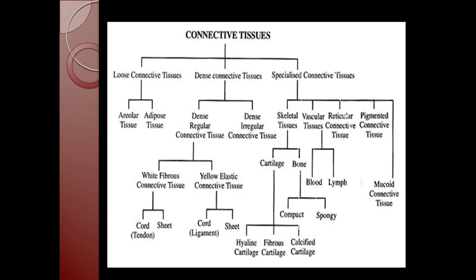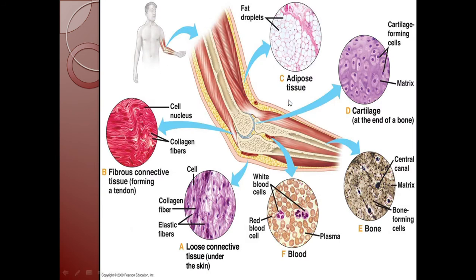Now let us discuss each type one by one. Here you can see the different types of connective tissue according to their location. The adipose tissues contain fat droplets and are a type of loose connective tissue found under the skin. Their main components are cells, collagen fibers, and elastic fibers. Here you can see a section of the arm showing various kinds of connective tissue. On the upper layer we can see the loose connective tissue found under the skin.